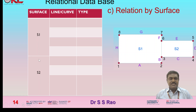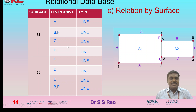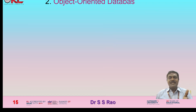Next is relation by surface. There are two surfaces, S1 and S2. In tabular form for S1, the bounding lines are A, B, F, G, and H — all of type line, no curves. For surface S2, the bounding lines are B, C, D, E, and F — also all lines. This tabular form gives the relation of each surface with its bounding lines and their types. These are the relational database models for this object.